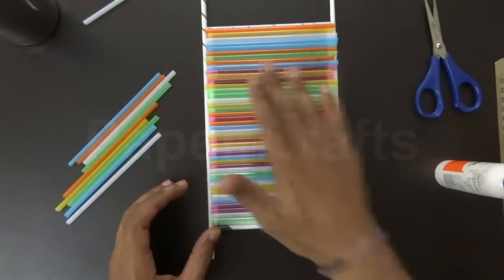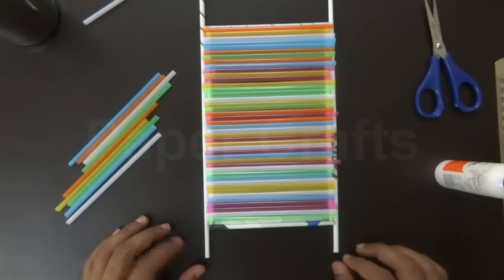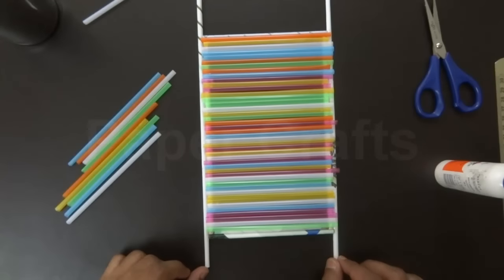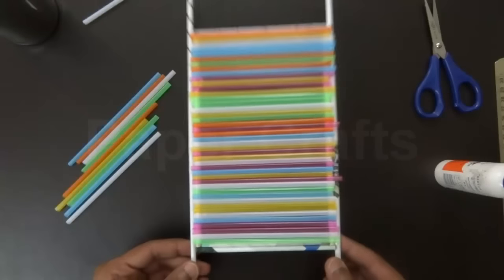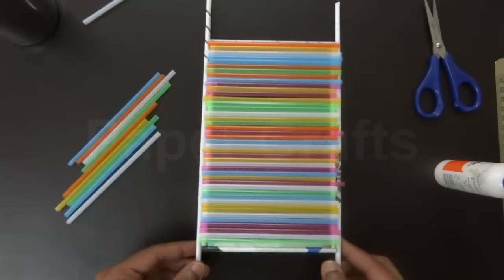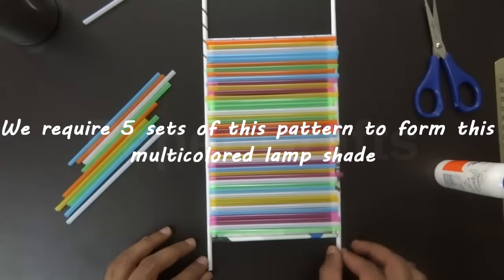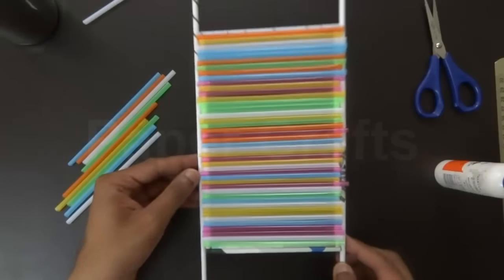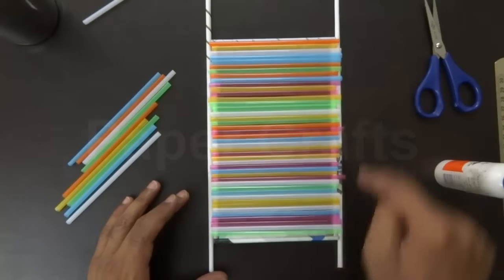Once you have pasted all the straws on this sheet let it dry for some time. Once the glue has dried you can pick this up. Now we need to make 5 such pieces of the same type. Repeat all the steps in the same way and make 5 pieces of similar shape and similar dimensions.